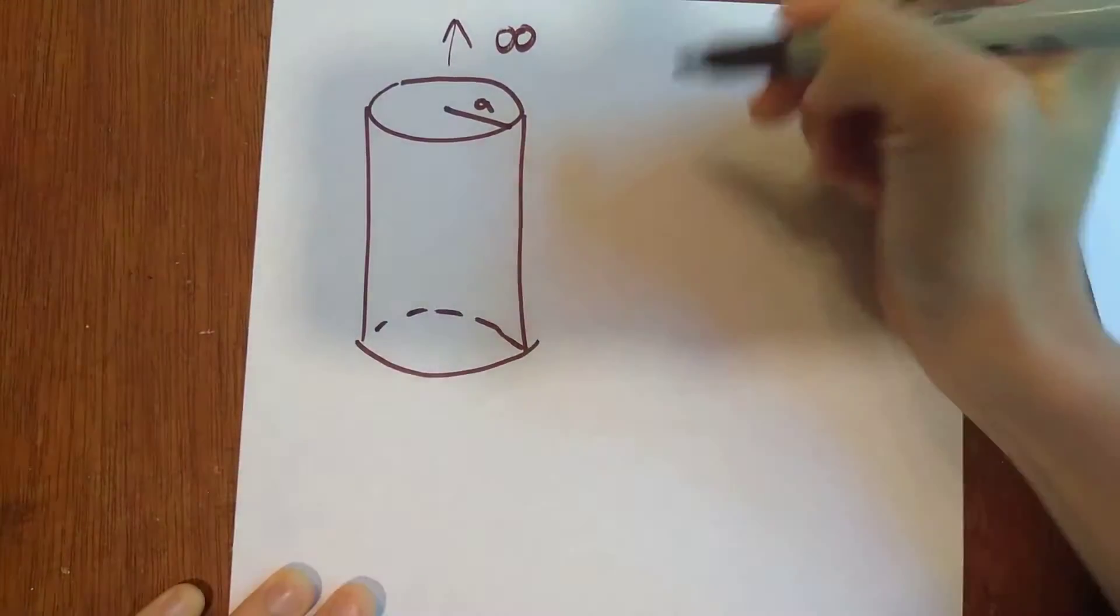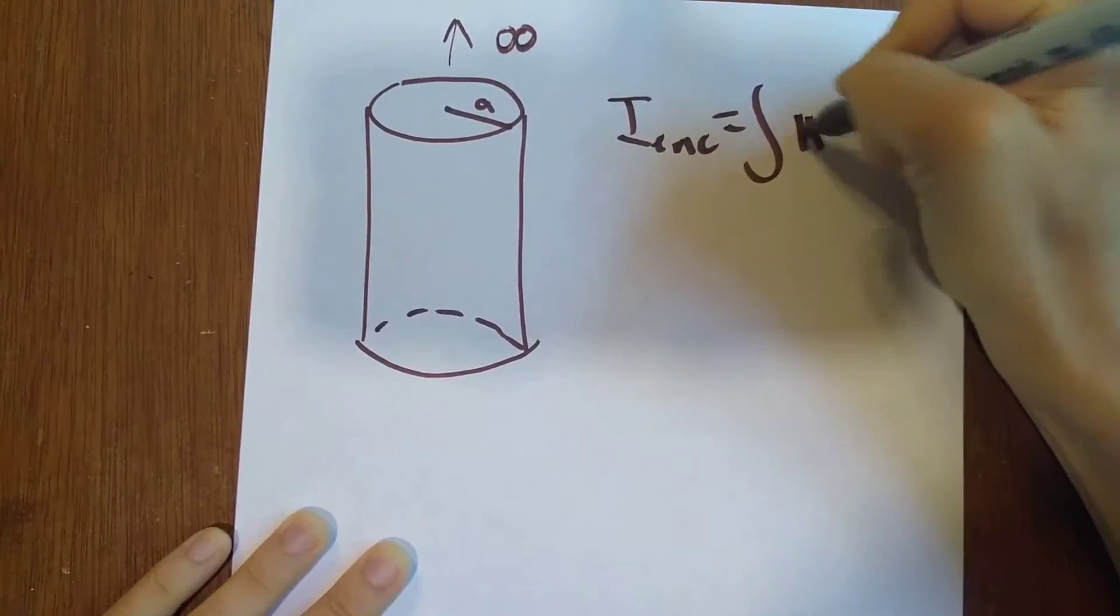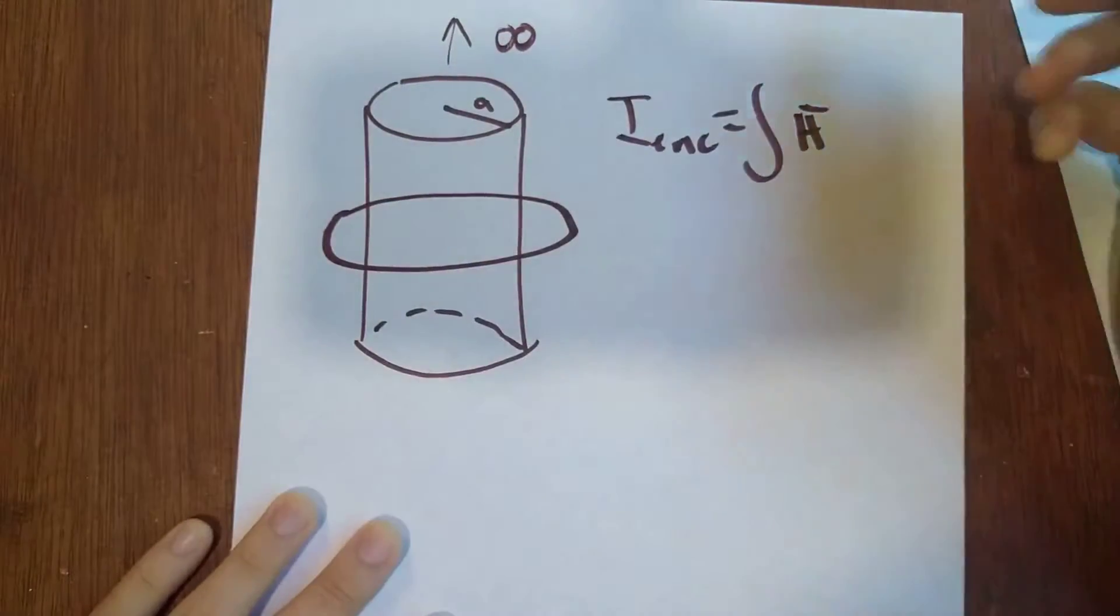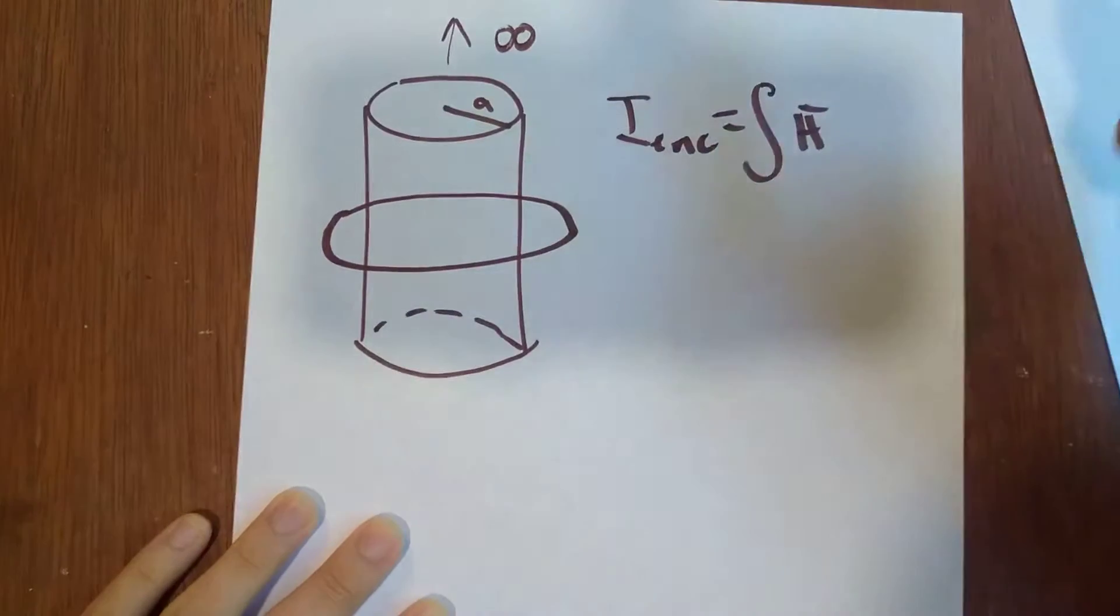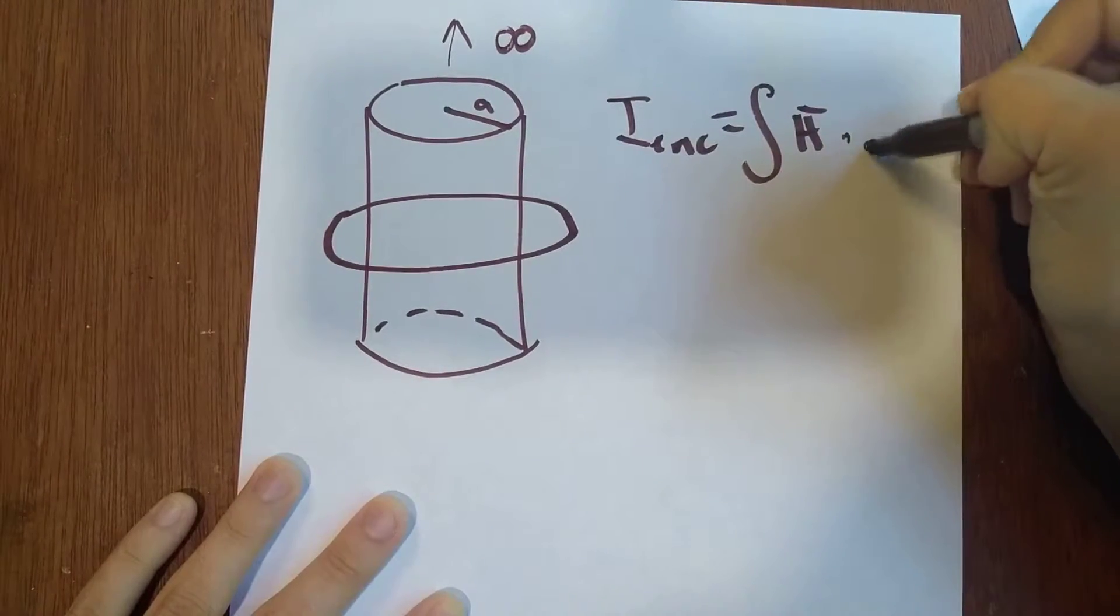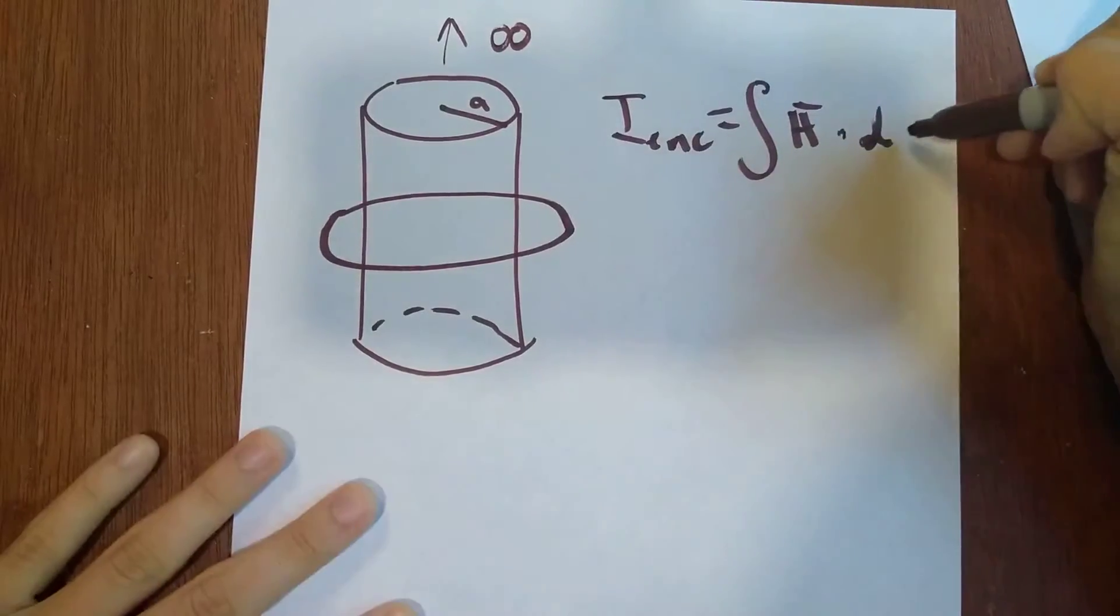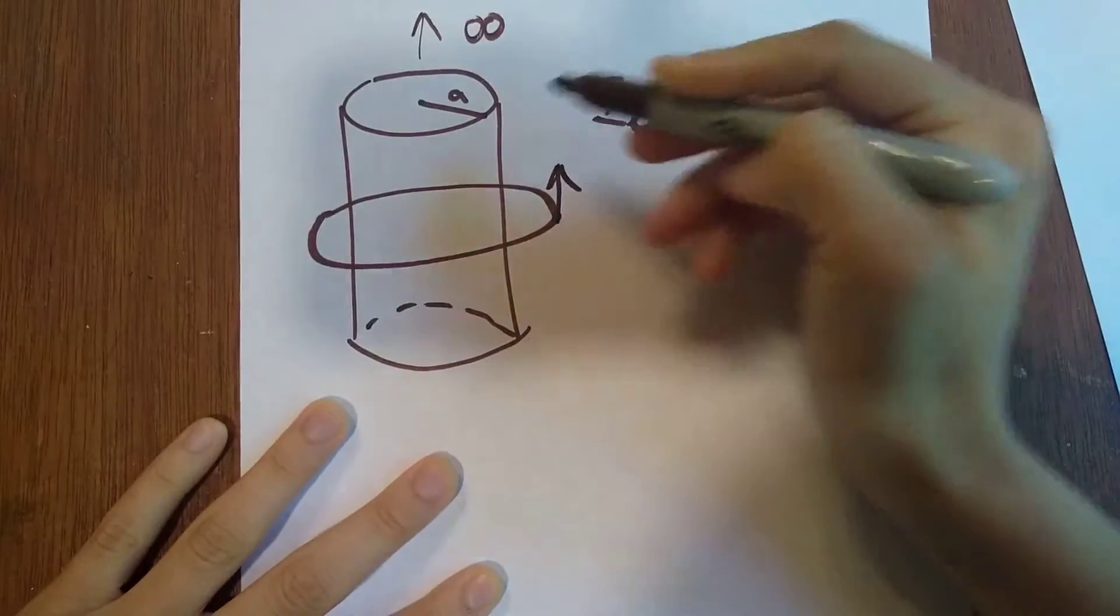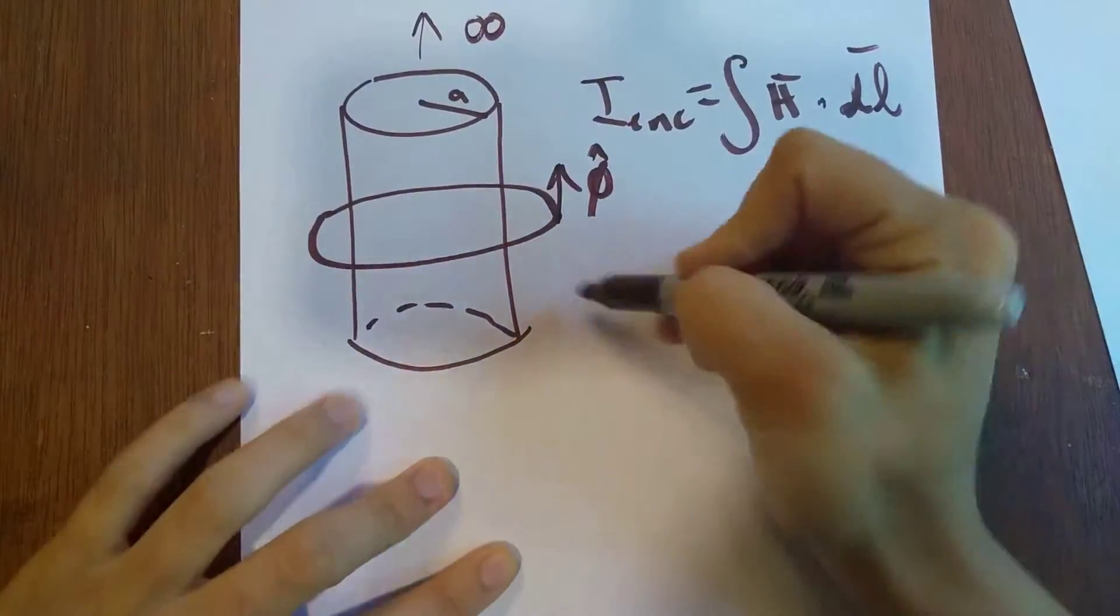First things first for Ampere's Law, we've got to do our Amperian loop. And the Amperian loop has to encircle the current flow, and it's got to be in the direction of the magnetic field. So if this is right here, this is the direction of phi hat right here.